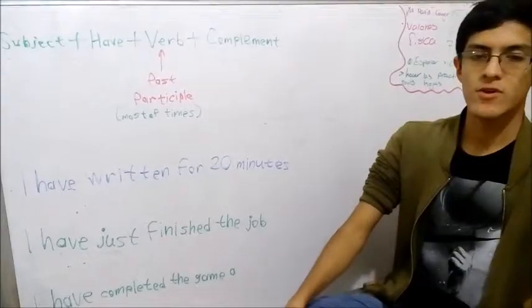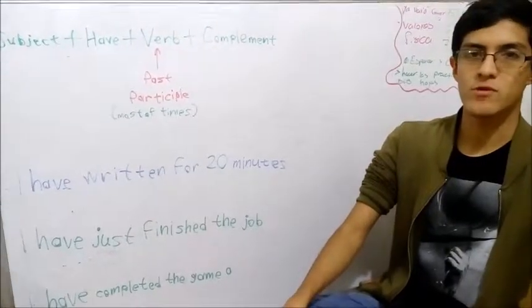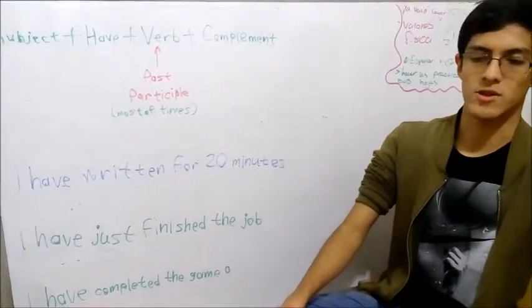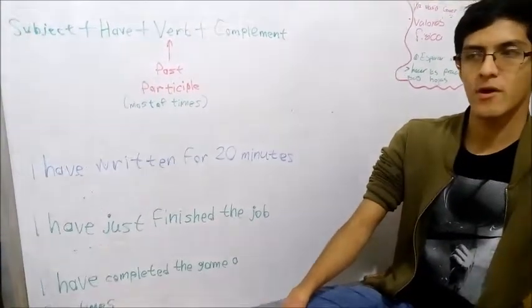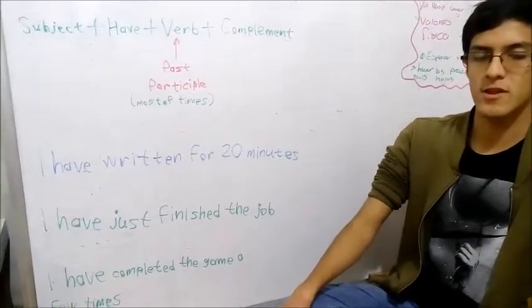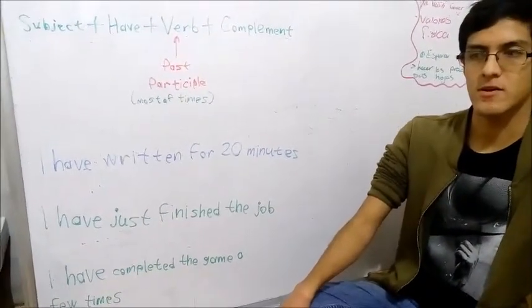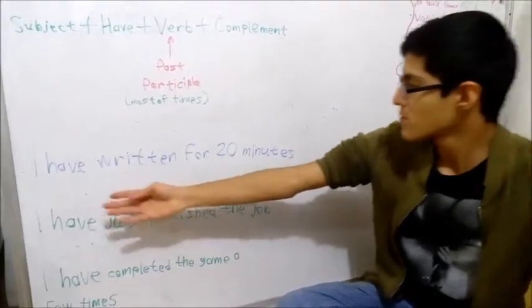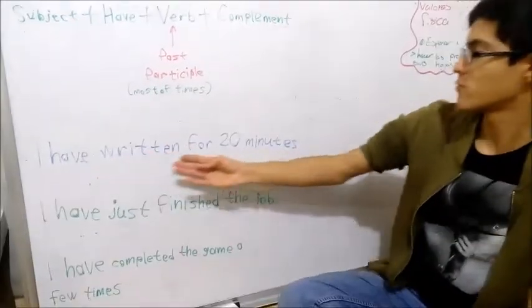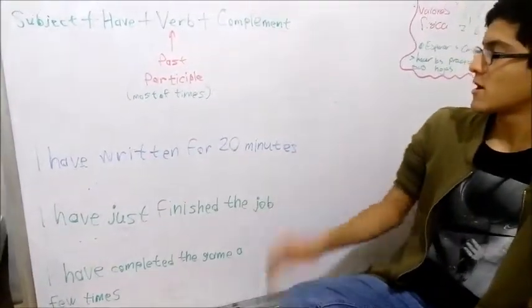Some of the uses of the present perfect are the following. One of them is to describe an action that is still happening. For example: I have been writing for 20 minutes.